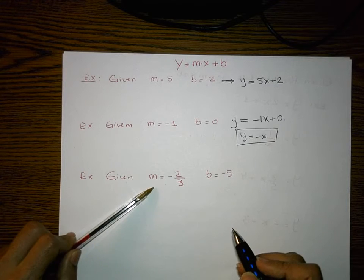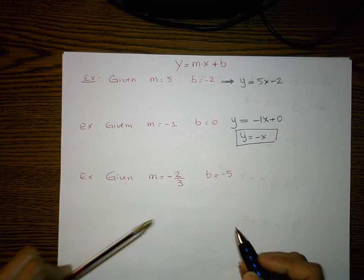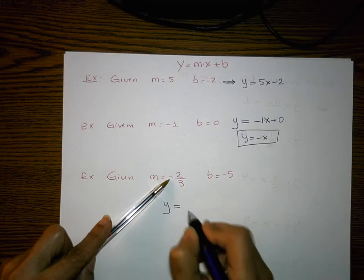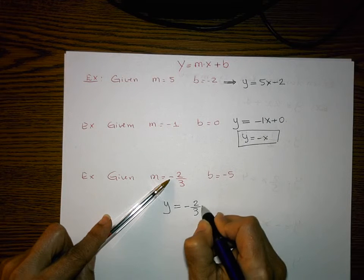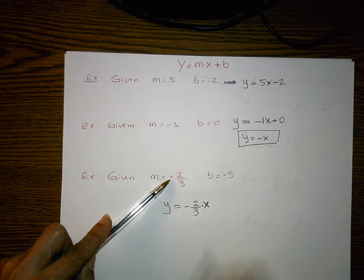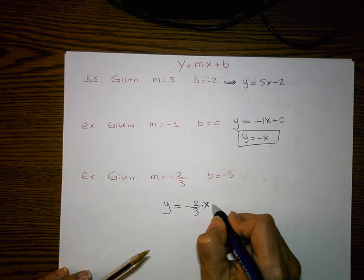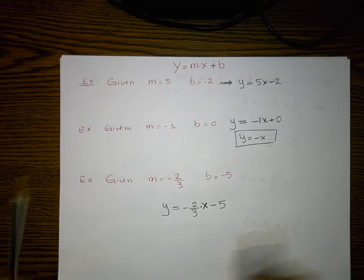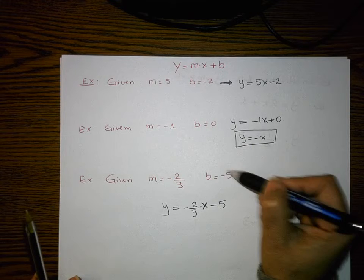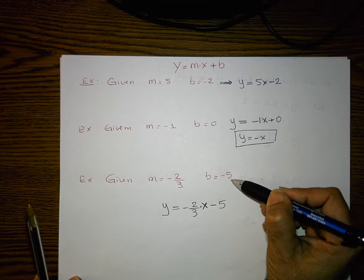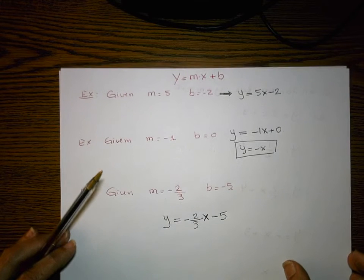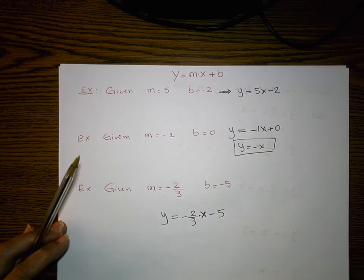Again, given the slope and given the y-intercept, can we plug those in and write the equation? Sure. y equals always my slope first, which is negative two-thirds times x, plus my b value, but here b is negative five. So the equation is y equals negative two-thirds x minus five. The y-intercept is where we touch the y-axis, and the slope takes us from one point to another.